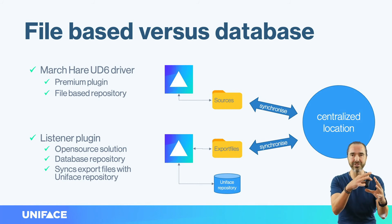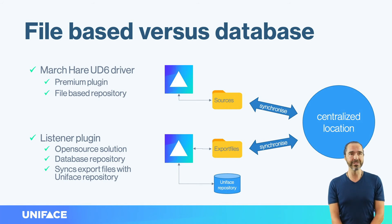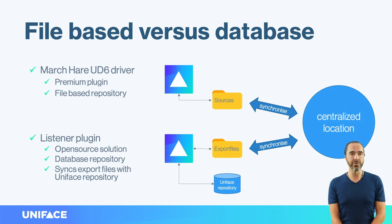There is a conversion between the Uniface database repository and file-based thinking. There are two possible solutions. One of them — known for many many years — is at the top of this slide: you have your Uniface client, and March Hare doesn't use a database for the repository, but stores directly in files. These files can be synchronized with the decentralized location. The other solution is available as a plugin — a solution provided by Uniface.